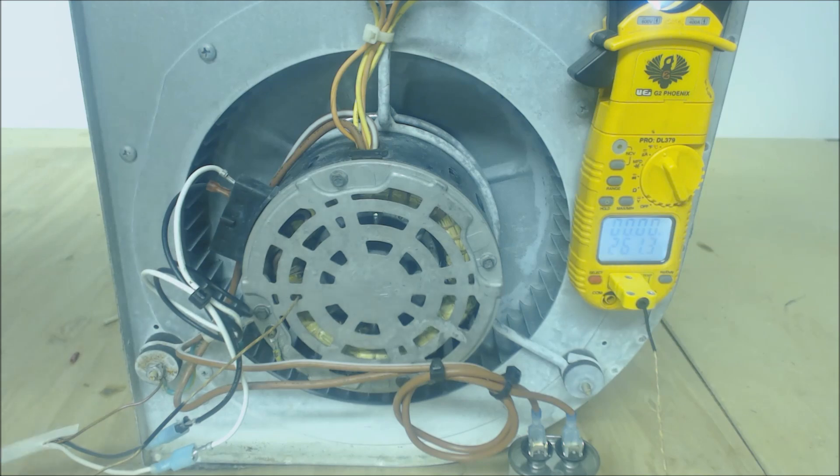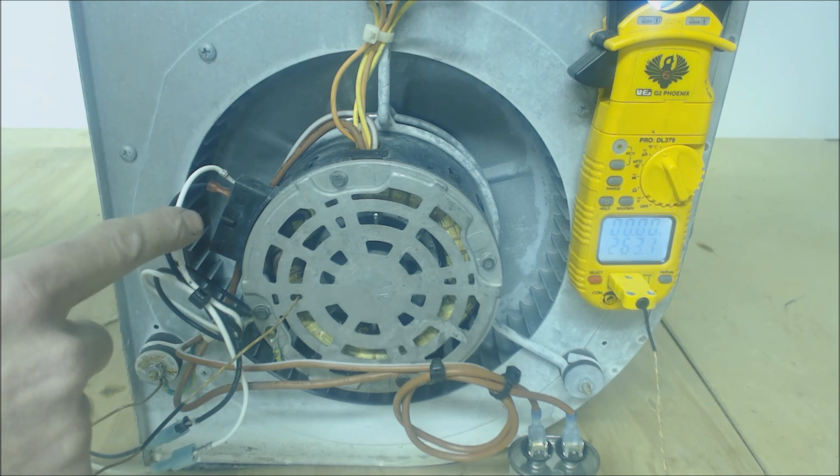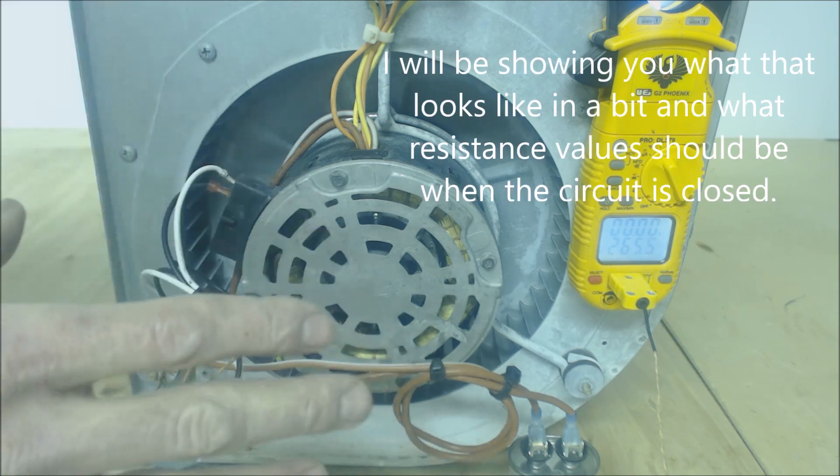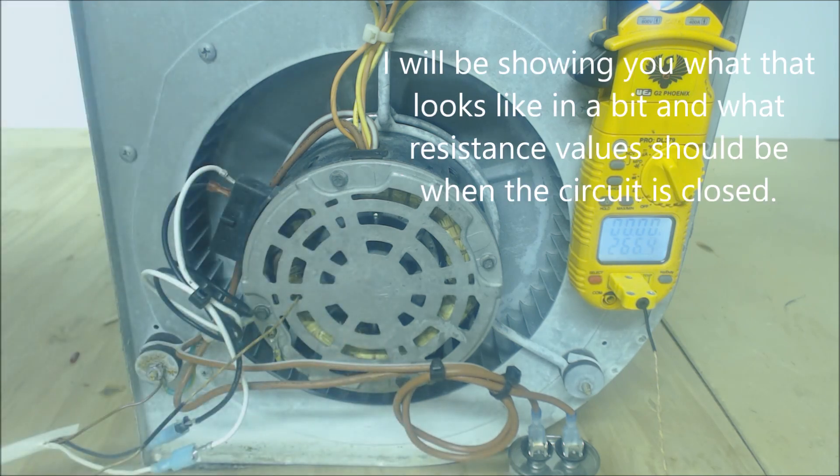The thermal overload is located on the common wire inside here. Regardless of whether it's a three-speed, four-speed, or five-speed blower motor, it's going to cut out the common wire on 120 volts. This way, regardless of what speed you have it on, it will open the electrical circuit and the motor windings will not be powered.